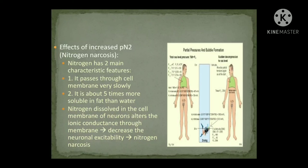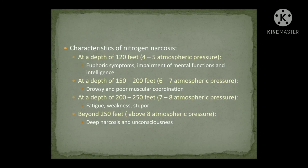The features of nitrogen narcosis by depth: at 120 feet (4 to 5 atmospheres), the person has euphoric symptoms and impairment of mental functions and intelligence. At 150 to 200 feet (6 to 7 atmospheres), the person becomes drowsy with poor muscular coordination. At 200 to 250 feet (7 to 8 atmospheres), there is fatigue, weakness, and stupor. Beyond 250 feet (above 8 atmospheres), deep narcosis and unconsciousness occur.